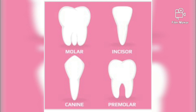First is incisors. Incisors are eight in number, four each in the upper and lower jaws. These are flat, chisel-shaped, and are used to cut and bite solid food.